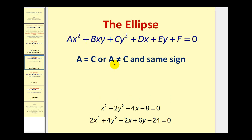If A equals C or A doesn't equal C but they have the same sign, we would have an ellipse. Now it may seem like this is overlapping with the conditions for a circle, and it is because all circles are ellipses. So the coefficients of the x squared term and the y squared term can equal each other or not, but they do have to have the same sign. If this is the case, we will have an ellipse.